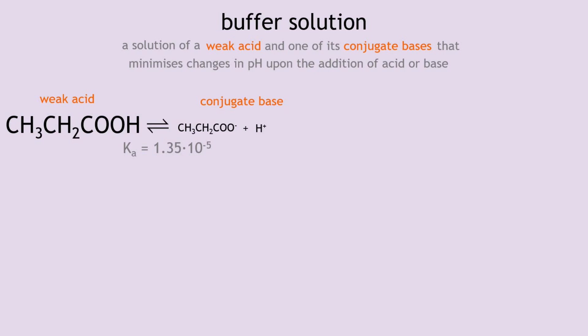This diagram is not at all to scale — there are much, much fewer propanoate and hydrogen ions. Since we have very little conjugate base from the weak acid alone, the second component of the buffer solution has to come from somewhere else.